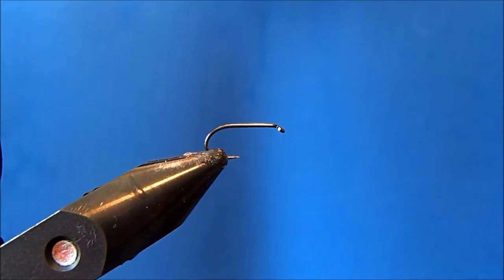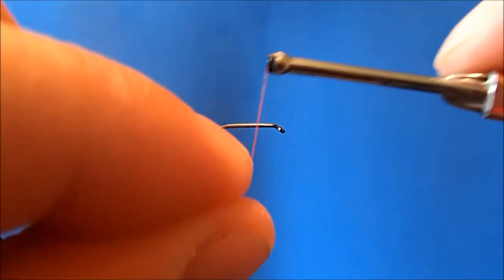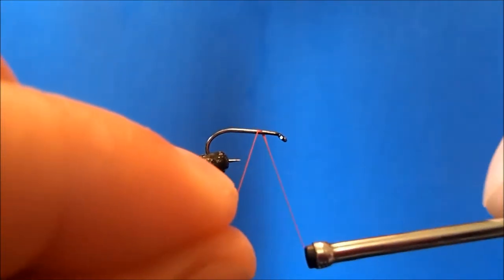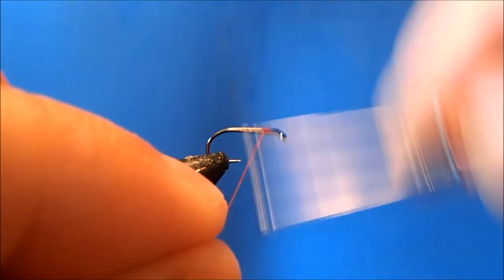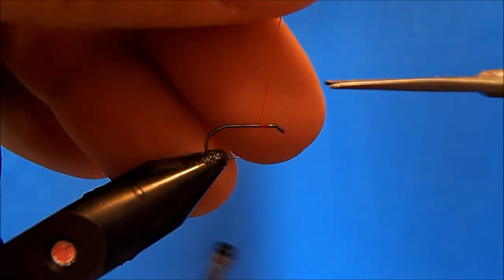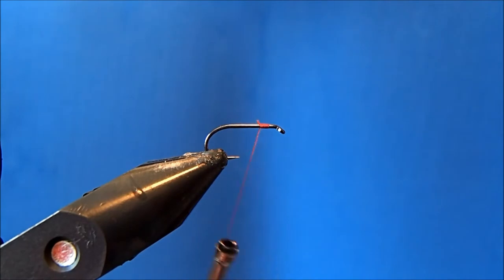I'm going to tie a high-vis parachute ant, starting off with a size 14 dry fly hook in the vise. The thread I'm going to use is an 8-0 red to make this a rust color. I'll get started by wrapping my thread to about the two-thirds mark in the hook shank and trim off the excess.